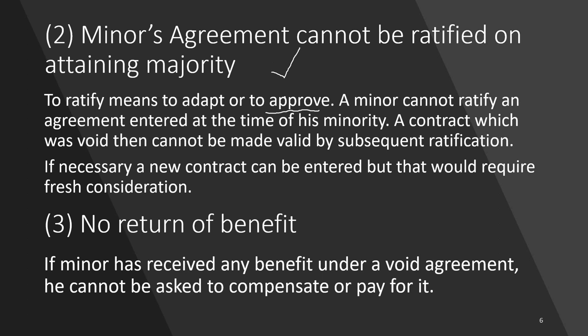If necessary, a new contract can be entered, but that would require fresh consideration. For past consideration, even if consideration can be passed, there should be consideration — without consideration there cannot be a contract. Something already done as a minor: if a promise is not being made, you are not obliged, and even if promising, fresh consideration would be required. Remember, a minor cannot ratify or approve anything.